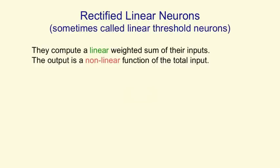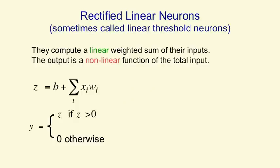A kind of neuron that combines the properties of both linear neurons and binary threshold neurons is a rectified linear neuron. It first computes a linear weighted sum of its inputs, but then it gives an output that's a non-linear function of this weighted sum. So we compute z in the same way as before. If z is below 0, we give an output of 0.